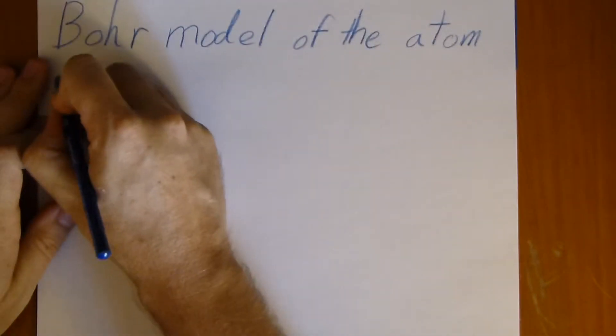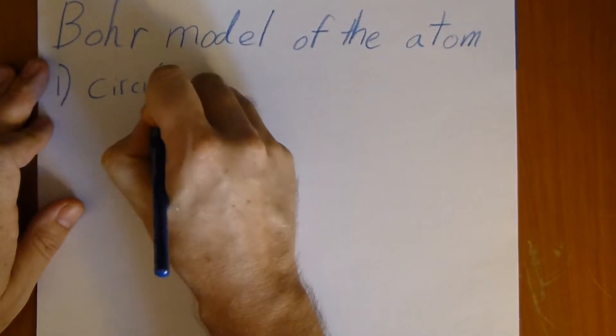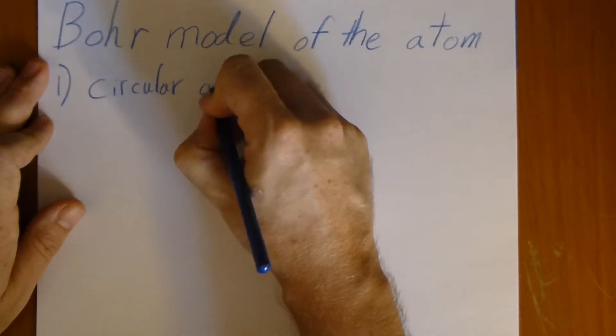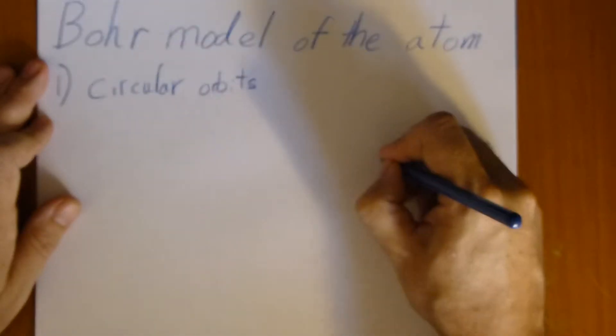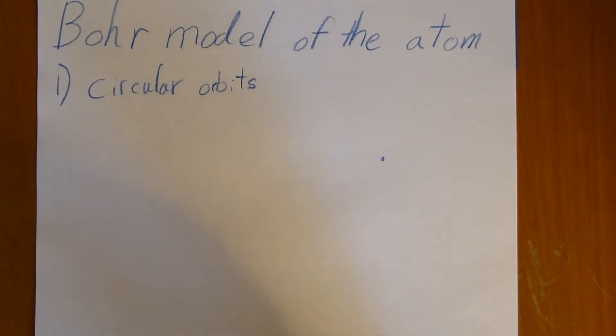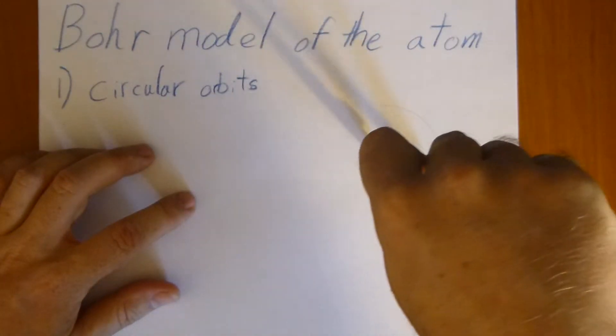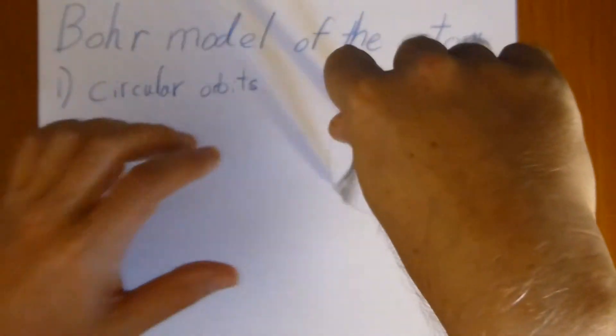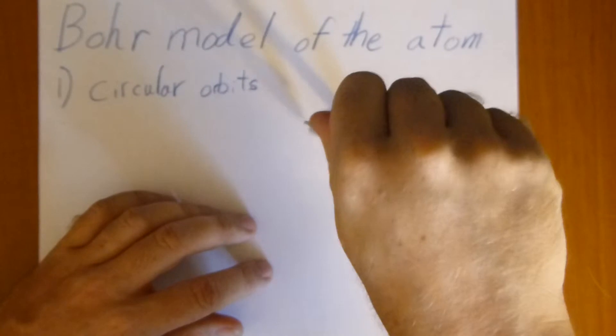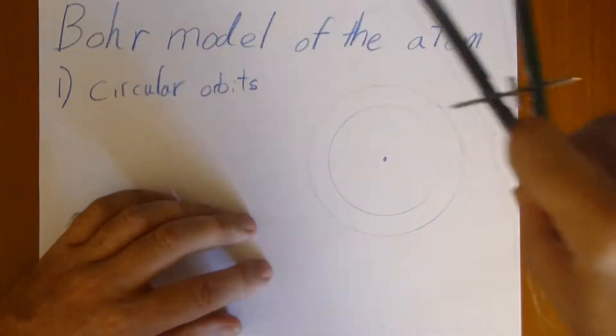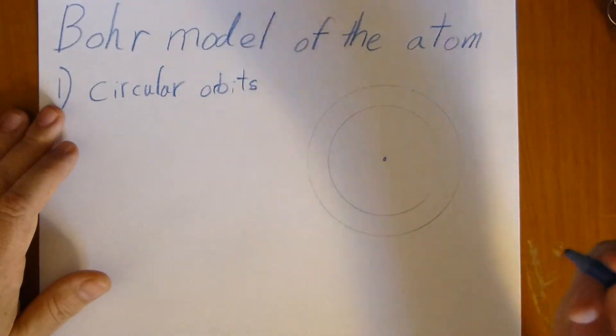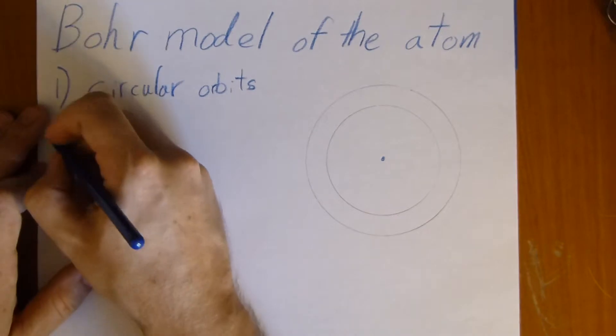We're going to look at the Bohr model of the atom. This relies on four basic postulates, namely, first, that we have circular orbits. We have a nucleus with electrons going around in circles. So we'll draw little circles here. Of course, those of us who know some quantum mechanics know this isn't the whole story. The Bohr model is not the final answer to everything, but it is a good place to start. So circular orbits.